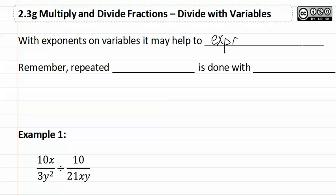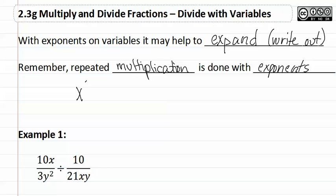Remember that means write out all of the variables. Also, remember that repeated multiplication is done with exponents. So if you have something such as x to the third, this is the same thing as x times x times x.